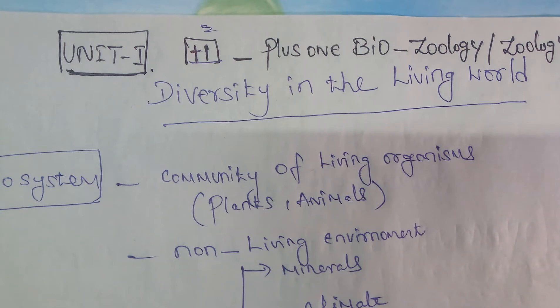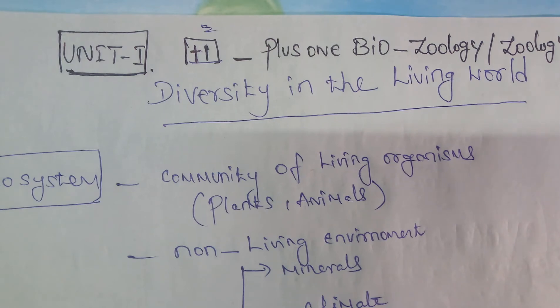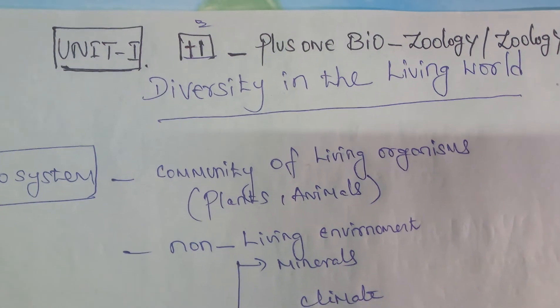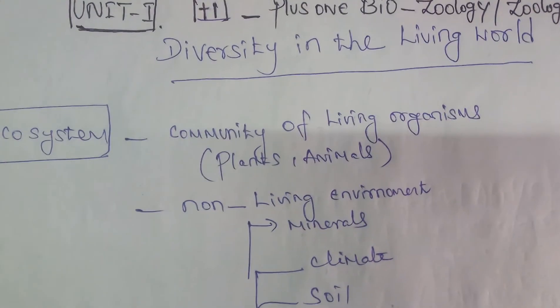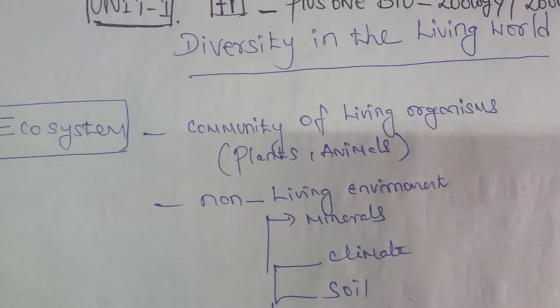Ecosystem — community of living organisms, including plant and animal, and non-living environment, that is, mineral, climate, soil, water, sunlight. It will comprise ecosystem.